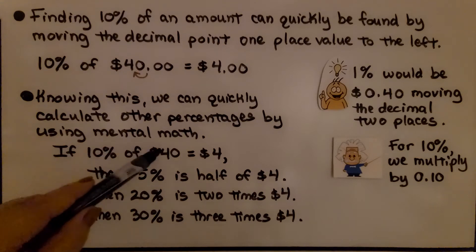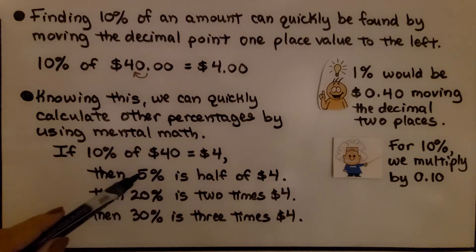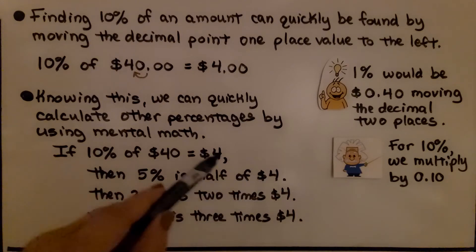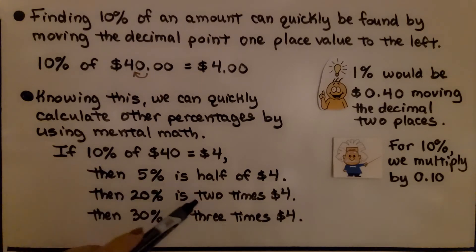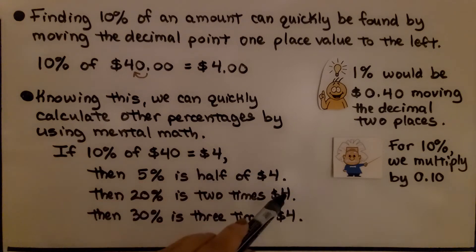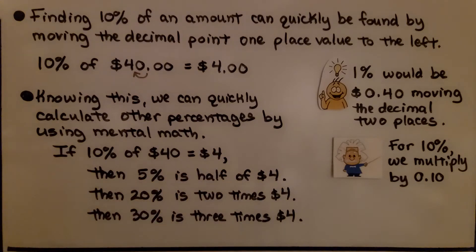If 10% of $40 is $4, then 5% — which is half of 10% — is half of $4, which is $2. And 20%, which is 2 times 10%, is 2 times $4, giving us $8. And 30%, which is 3 times 10%, is 3 times $4, giving us $12. We can quickly do these using mental math if we can figure out 10%.